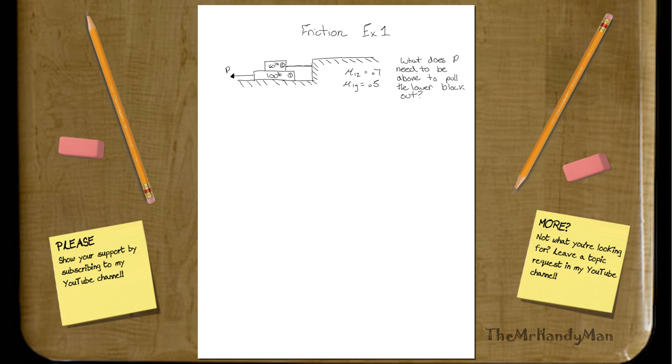This is the first example of our friction problems. What you have here is a 100-pound brick with another 60-pound brick on top of it. Combined, the force being applied to the ground is 160 pounds.